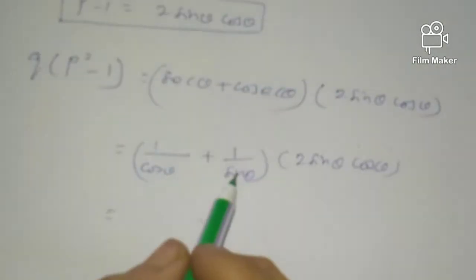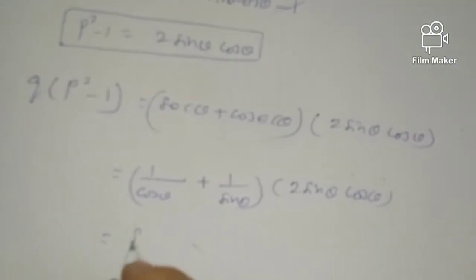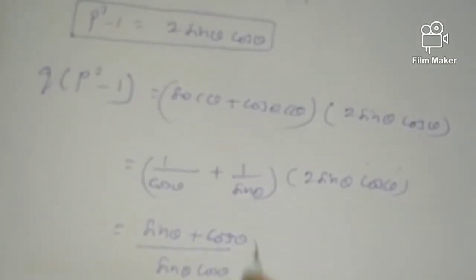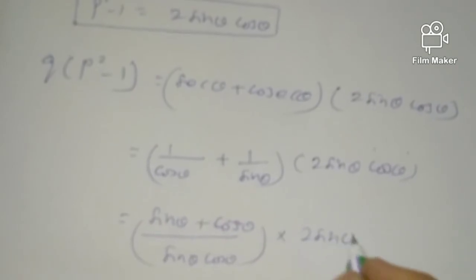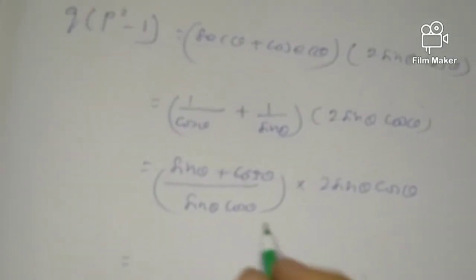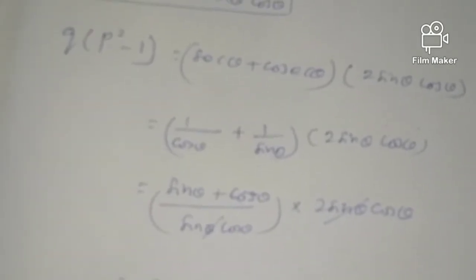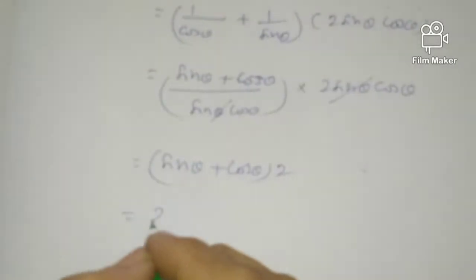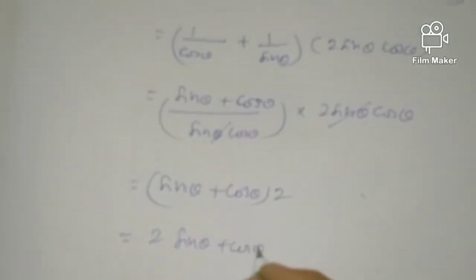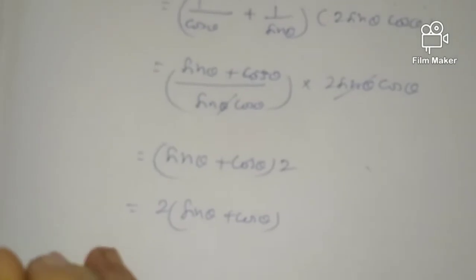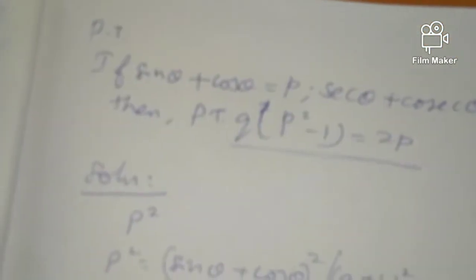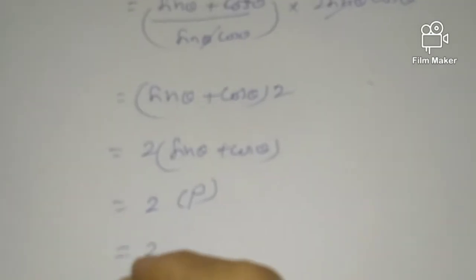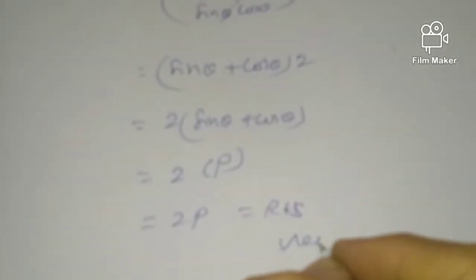Taking LCM for the Q terms gives sin theta plus cos theta by sin theta cos theta, multiplied by 2 sin theta cos theta. Cancelling sin theta cos theta, we get 2 times sin theta plus cos theta, which equals 2P, equal to RHS. Proved.